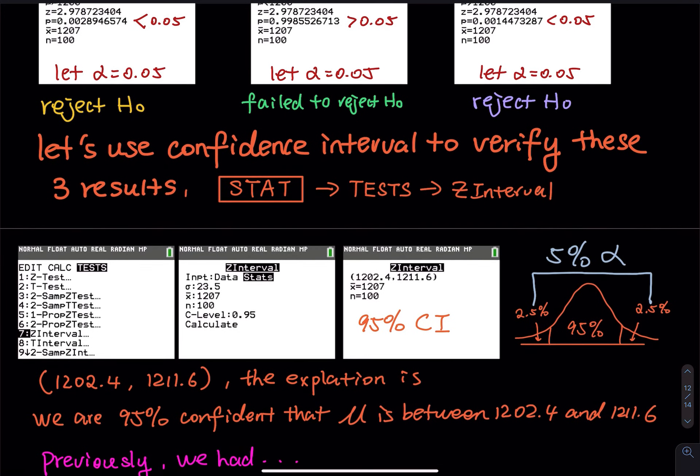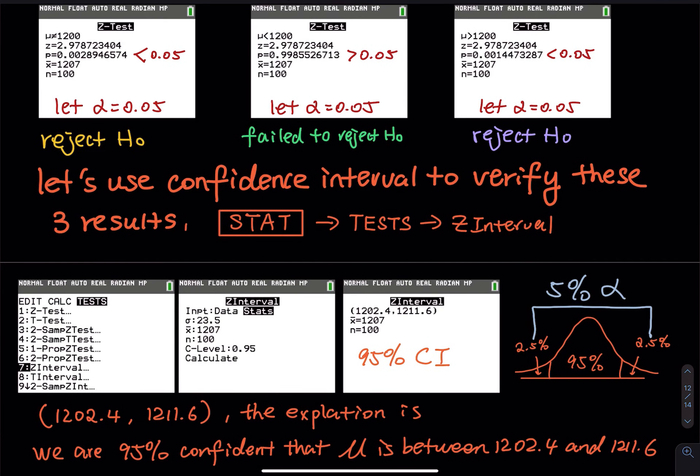You should see this. You go to STAT TEST — on my calculator it is number seven, z-interval. Select it, press enter, go to stats. You don't need to change any of the numbers — they are all there — except you might have to fix the confidence level.